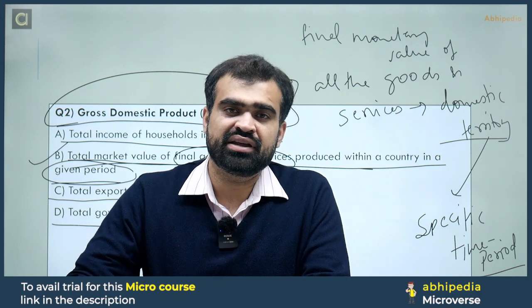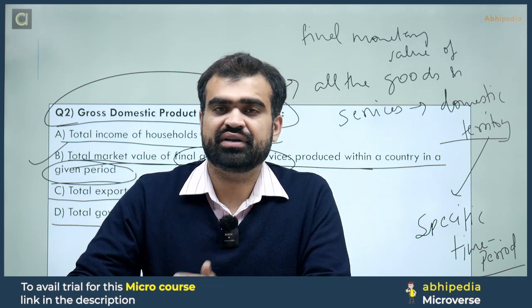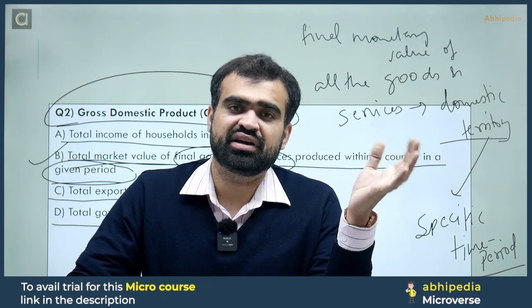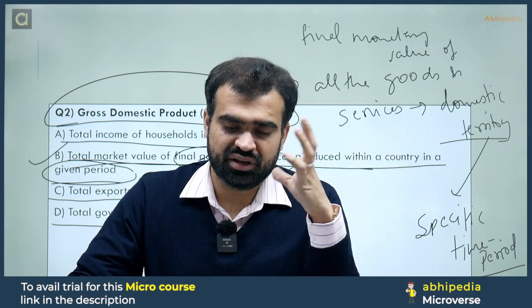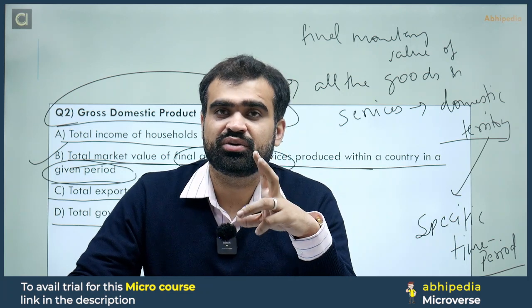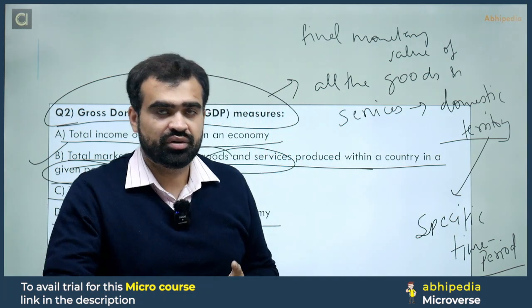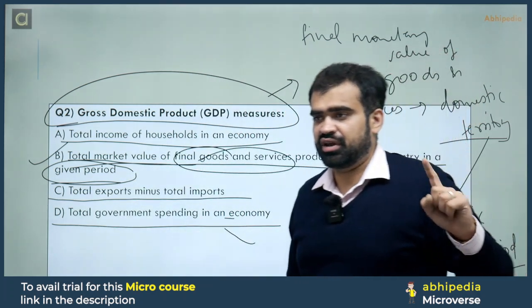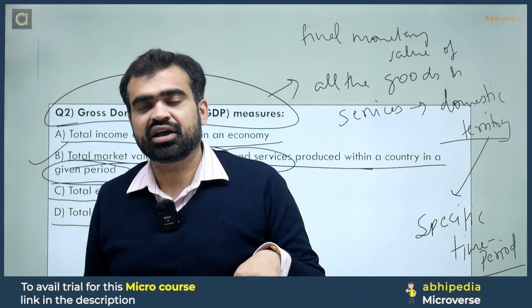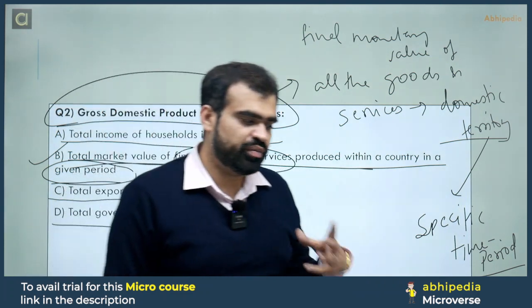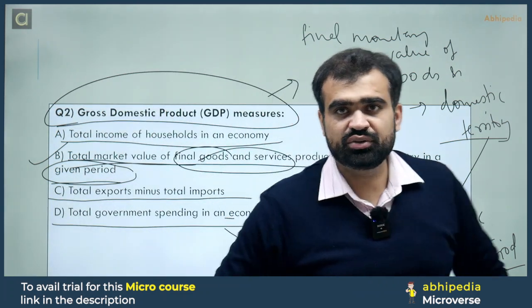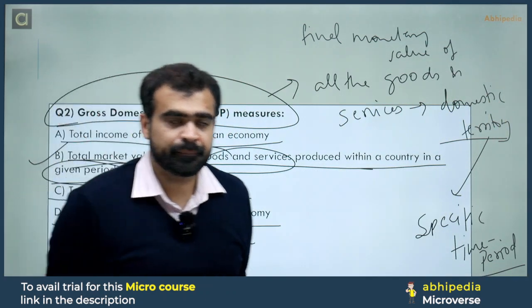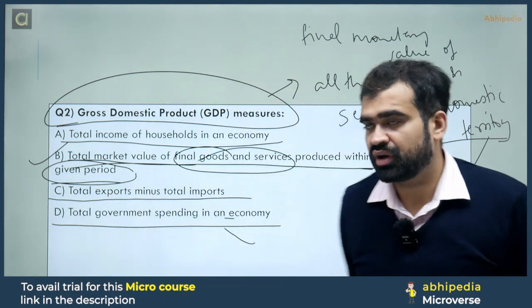An important point: GDP counts production within Indian territory only. For example, if Priyanka Chopra is living in the US and sending money to India, that does NOT count in India's GDP because she is earning from US territory. But if a foreign national establishes a company inside India's territory, the monetary value of goods and services they produce WILL count in India's GDP. The correct answer is option B.